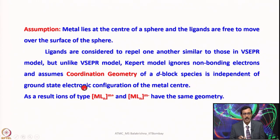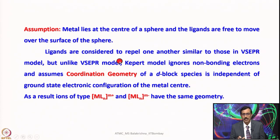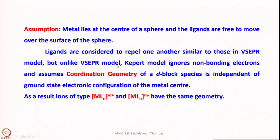As a result, ions of the type MLn — whether cationic or anionic — if the number of ligands is the same, they are bound to have the same geometry. However, we know this cannot be used for various reasons, because most complexes' geometry, reactivity, and properties depend on the electronic configuration, oxidation state, and many other factors. As a result, the Kepert model employing VSEPR theory did not work well.